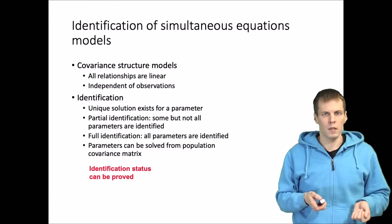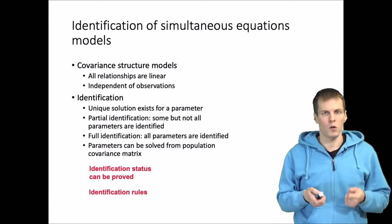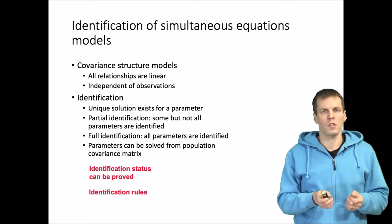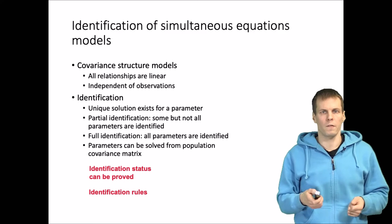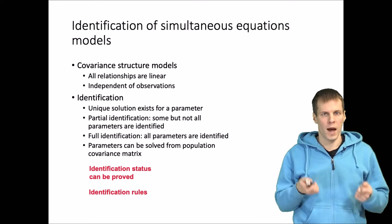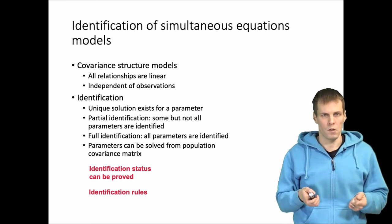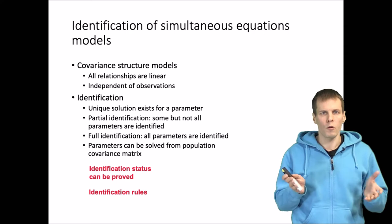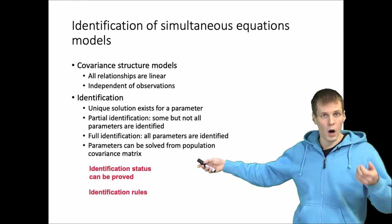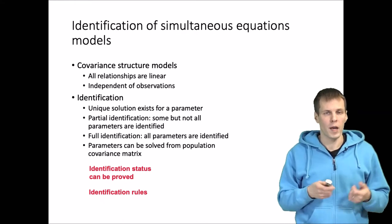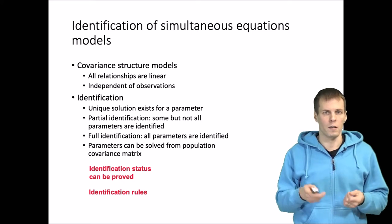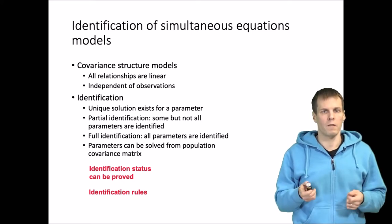Another approach for establishing identification is to apply certain rules. There are certain classes of models or models with certain features that have been shown to be always identified or always non-identified, and applying these rules is a lot more practical. Sometimes we don't have rules, and then proving part of the identification problem can be useful. There is also a third way — the empirical strategy — which I'll talk about at the end of this video.